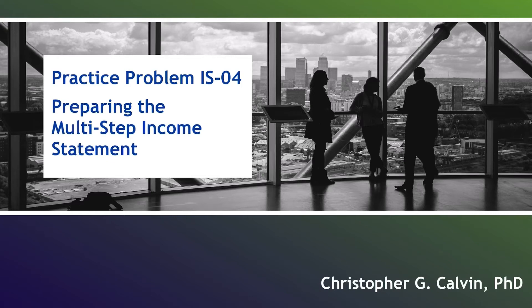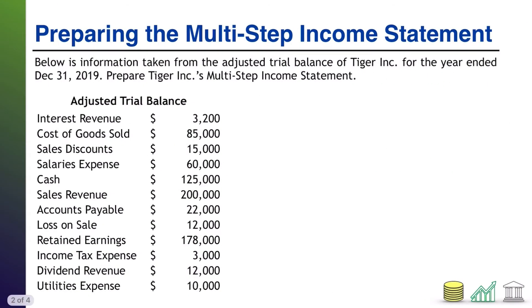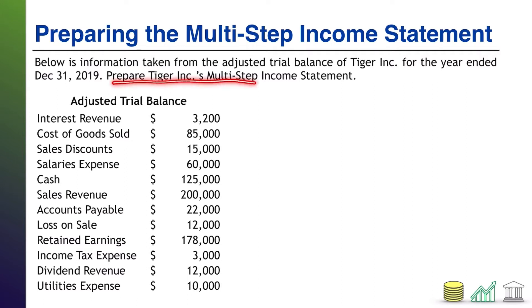Hi, everyone. Welcome to Practice Problem ISO4. In this one, we are going to prepare a multi-step income statement. Below is information taken from the adjusted trial balance of Tiger, Inc. for the year ended December 31, 2019. The adjusted trial balance is used to prepare a company's financial statements, and in this problem specifically, we're being asked to prepare the multi-step income statement. So take a moment, pause the video, try this out for yourself. When you're ready, come on back — I'll walk you through the solution.